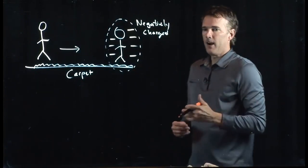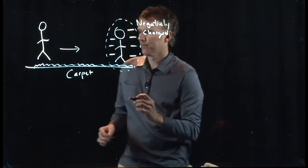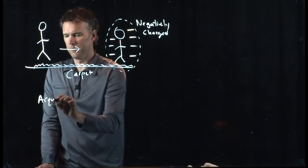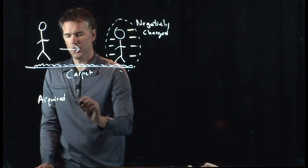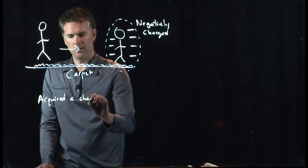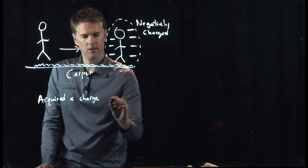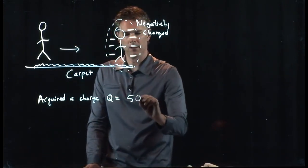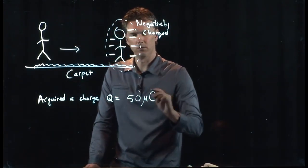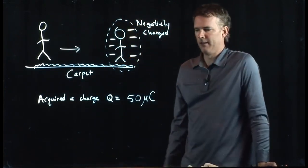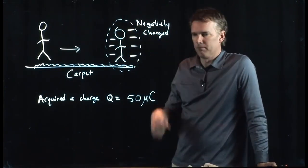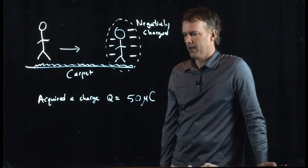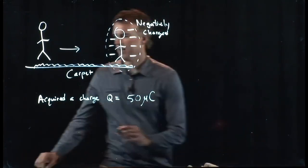Let's figure out how many electrons you actually picked up. And let's say that you acquired a charge of the following: 50 microcoulombs. That's probably a reasonable number for walking across the carpet. How many electrons is that?